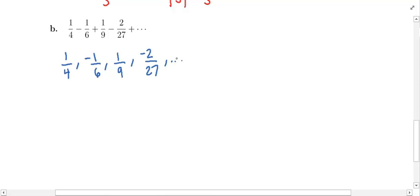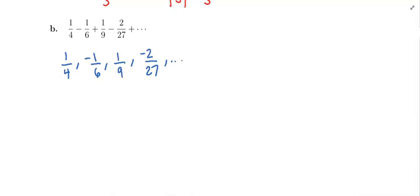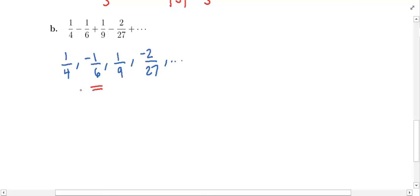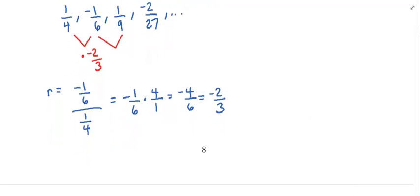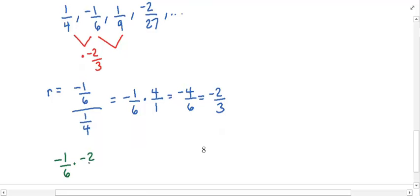Let's look at how we go from one term to the next. To tell if something is geometric and get the R value, pick a term and divide by the term before it. Taking negative 1/6 divided by 1/4 gives negative 1/6 times 4/1, which is negative 4/6, reducing to negative 2/3. We need to verify this holds: multiplying negative 1/6 by negative 2/3 gives positive 2/18, which reduces to 1/9. That checks out.